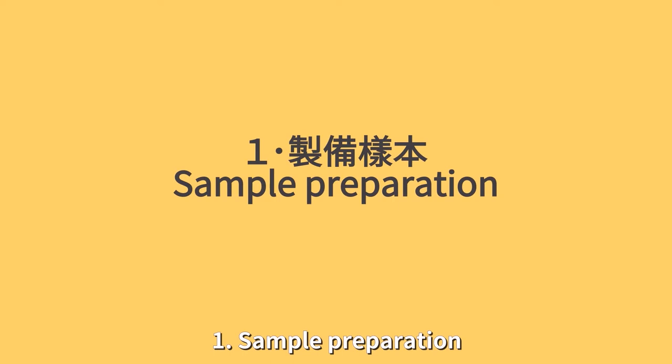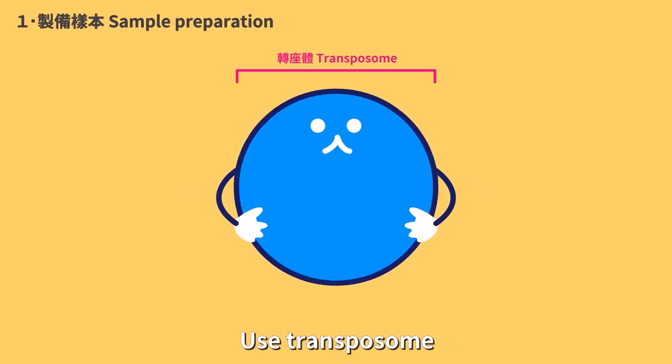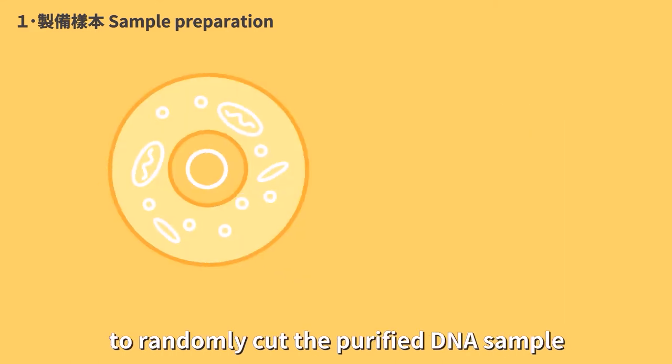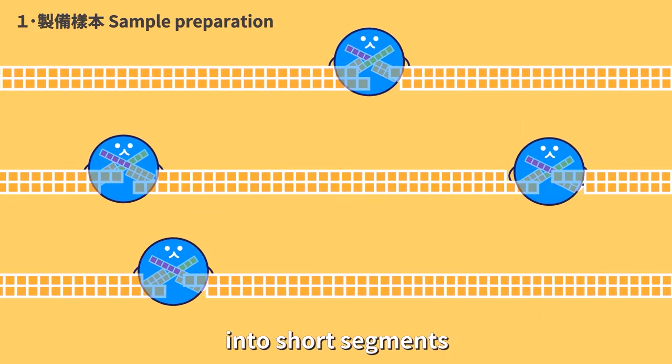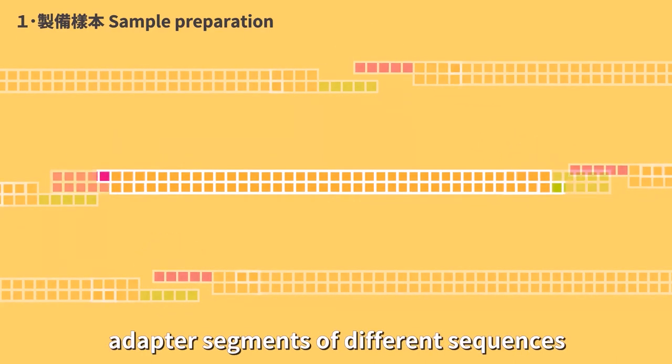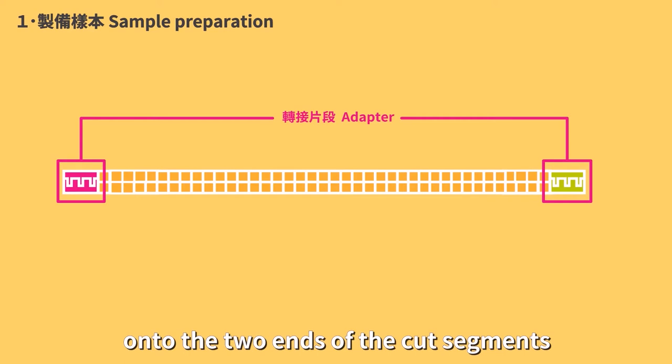Step 1: Sample preparation. Use transposome, composed of transposase and transposome, to randomly cut the purified DNA sample into short segments, while simultaneously introducing adapter segments of different sequences onto the two ends of the cut segments.